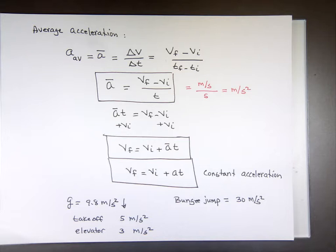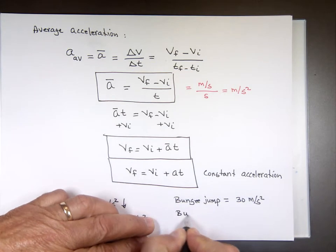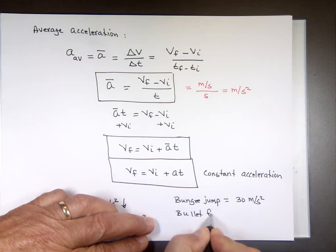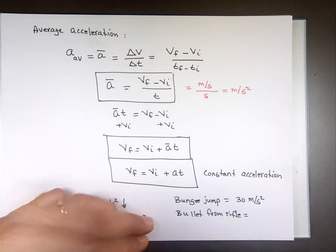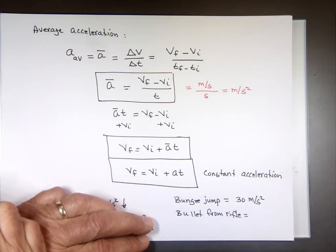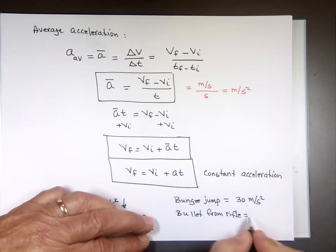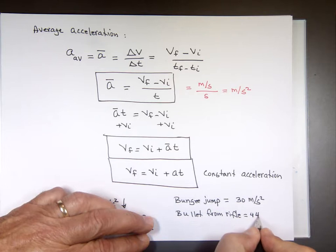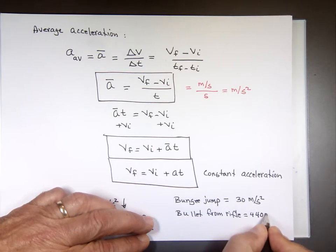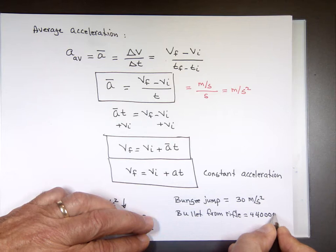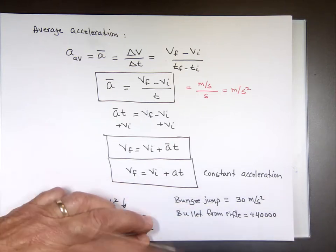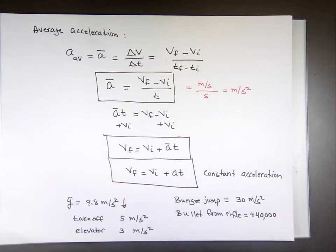A bullet from a rifle has an acceleration — ready for that number? — 440,000 meters per second squared.